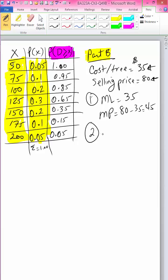Step two, compute critical probability of marginal loss divided by marginal loss plus marginal profit, which in this case is 0.438.